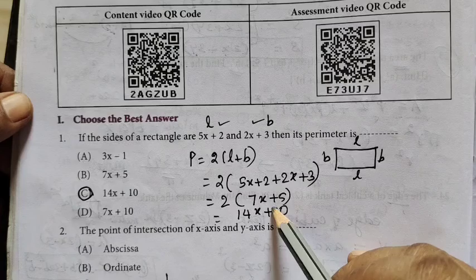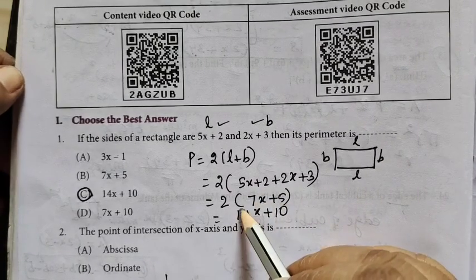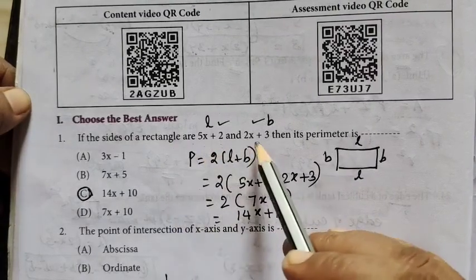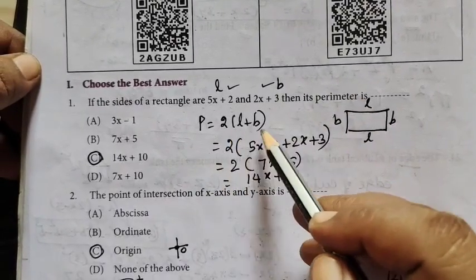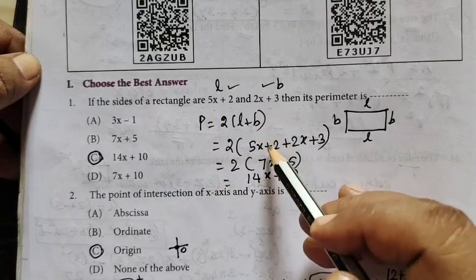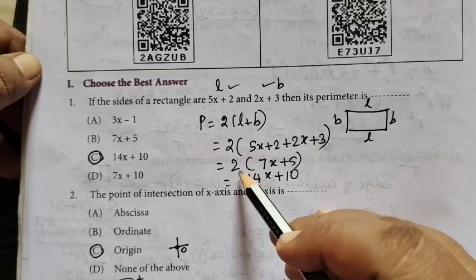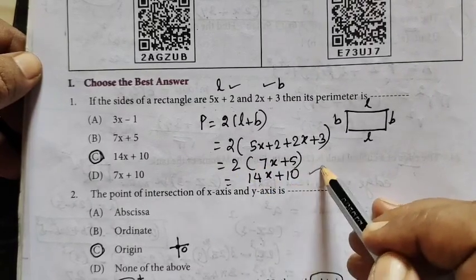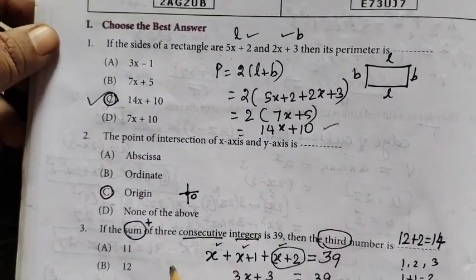The length of the rectangle is 5x plus 2 and breadth is 2x plus 3. Using perimeter formula 2(L + B), we get 2(5x + 2 + 2x + 3) equals 2(7x + 5) equals 14x + 10. So the answer is C, 14x + 10.